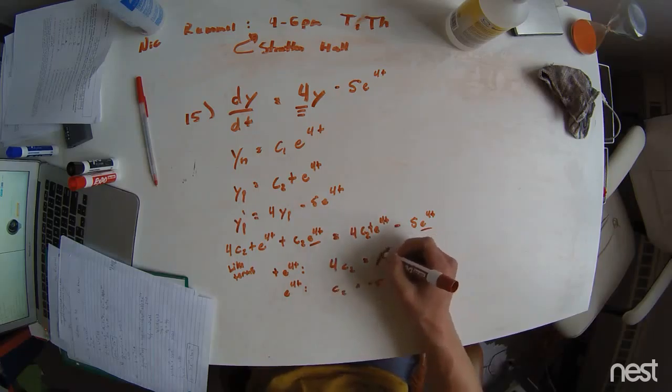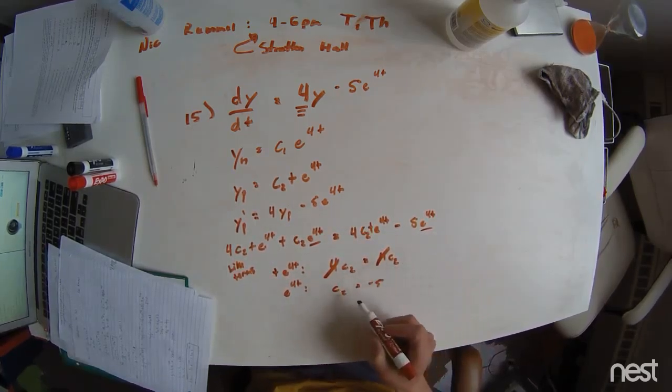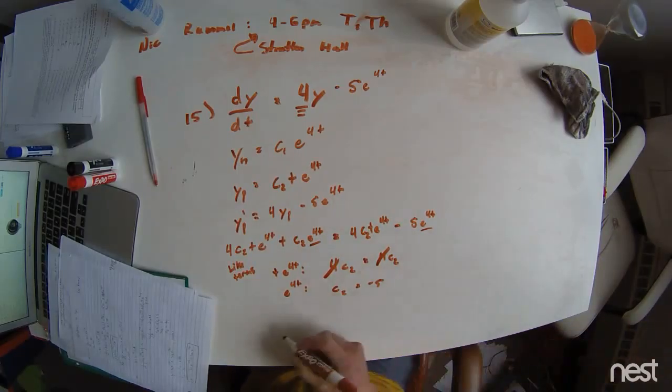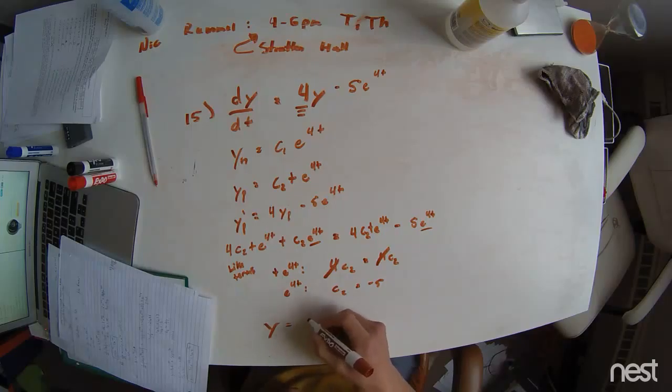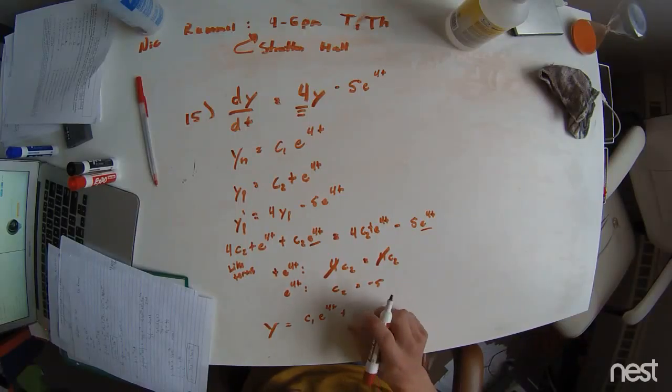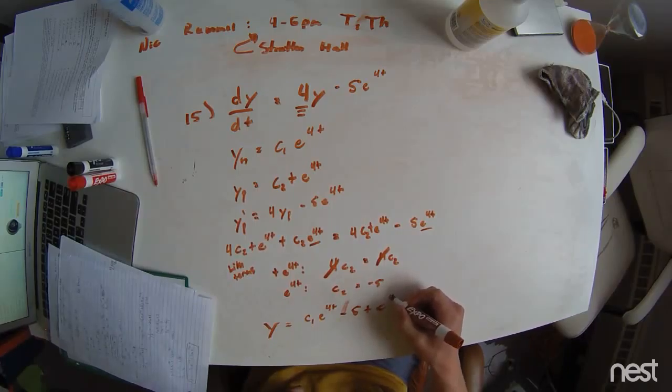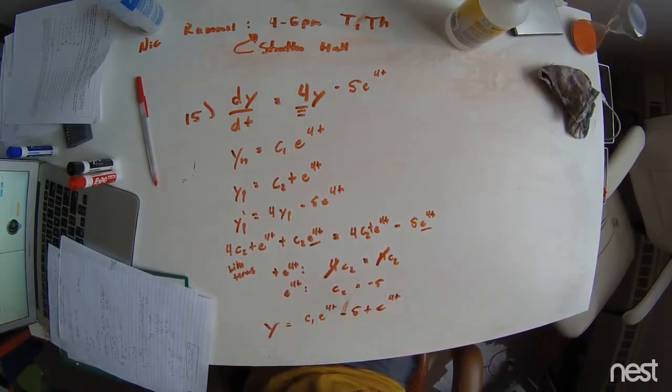This is kind of negligible. We cancel out the 4s, and we see that C2 equals C2, and this one tells us exactly what it is. So that's really nice. And we can combine these with the particular and homogeneous solution, and we get C1e to the 4t plus negative 5t e to the 4t. And that is your solution.